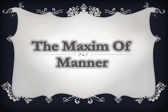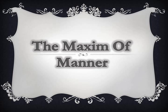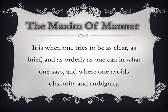The maxim of manner: it is when one tries to be as clear, brief, and orderly as one can in what one says, and where one avoids obscurity and ambiguity. We are going to see a video that violates this maxim. It is about a relationship between Ross and Mona. Mona suggested having a conversation about where the relationship is going, but Ross was very nervous because he didn't want to have this conversation.